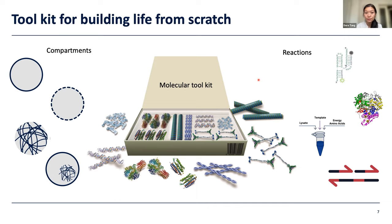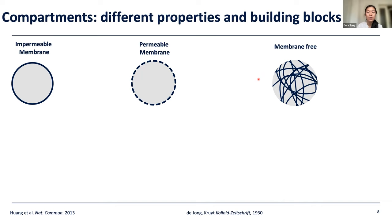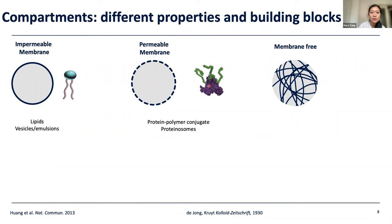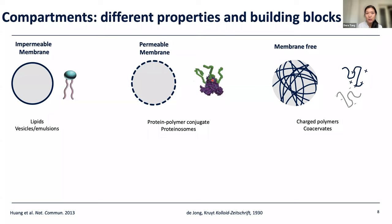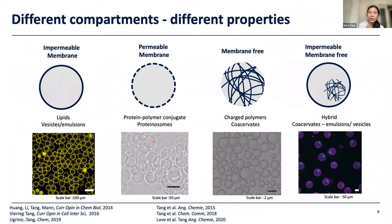What we've done towards the goal of addressing how reactions are tuned by compartments is to build a synthetic cell toolkit. This toolkit contains compartments of different physical properties and reactions of different flavours. We have mimics of impermeable membranes, typically based on lipids, which self-assemble in water to generate lipid vesicles. We also work with protein-polymer conjugates, which are chemically cross-linked molecules where proteins are conjugated to polymers, generating a system with porosity where large molecules are encapsulated inside and small molecules can diffuse in and out. The last system we work with is membrane-free coacervates, which are formed via coacervation of oppositely charged polyelectrolytes.